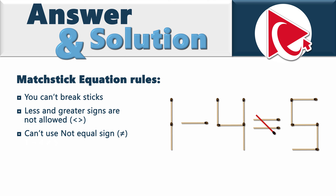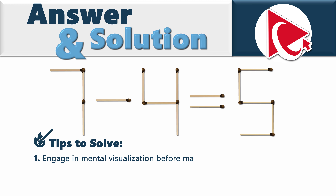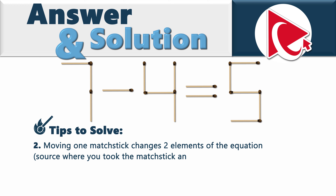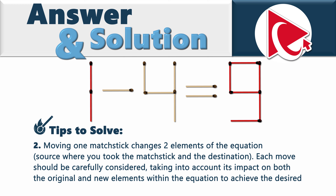So what can you do to solve this challenge? Number one, you need to engage in mental visualization before making any physical moves — envision the potential rearrangement of matchsticks. The most important consideration, which makes this problem so challenging, is that moving one matchstick changes two elements: the source where you took the matchstick from, and the destination. Each move should be carefully considered, taking into account its impact on both the original and new elements within the equation.